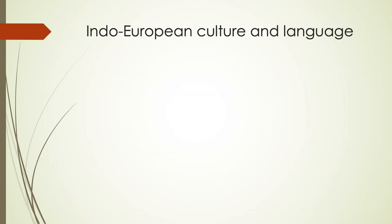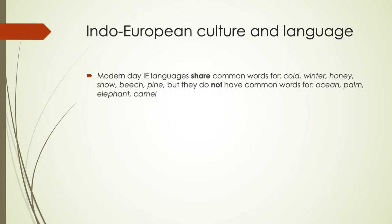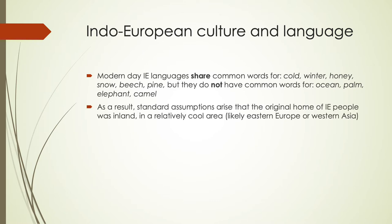What we know about where they would have started comes somewhat from the language itself. Modern Indo-European languages have shared common words for things like cold, winter, honey, snow, beach as in the tree, and pine. But they don't have common words for things like ocean, palm, elephant, or camel. This leads to an assumption that they were likely inland people in a relatively cool area, so the Caucasus Mountains in Eastern Europe or Western Asia is the most likely location.